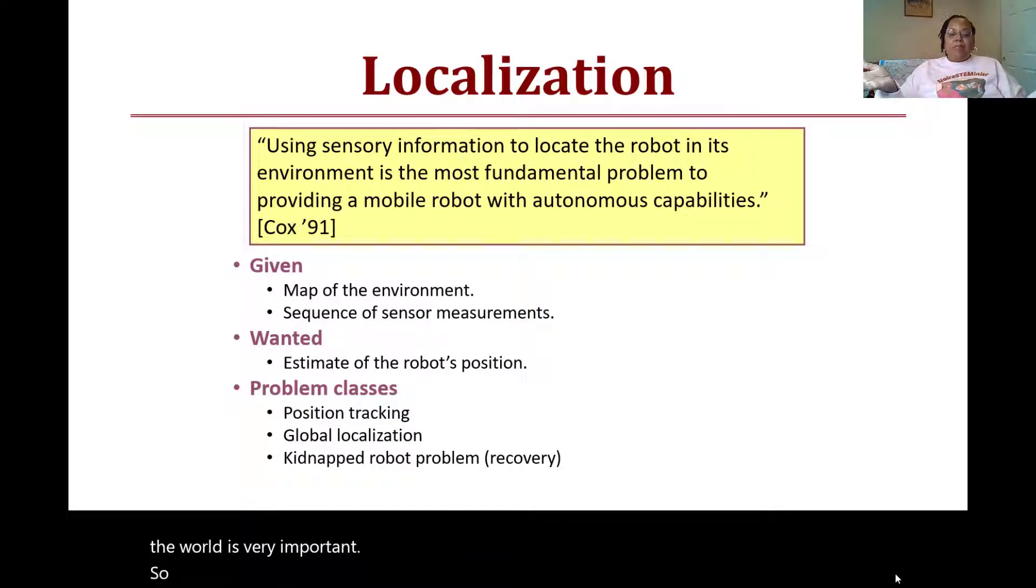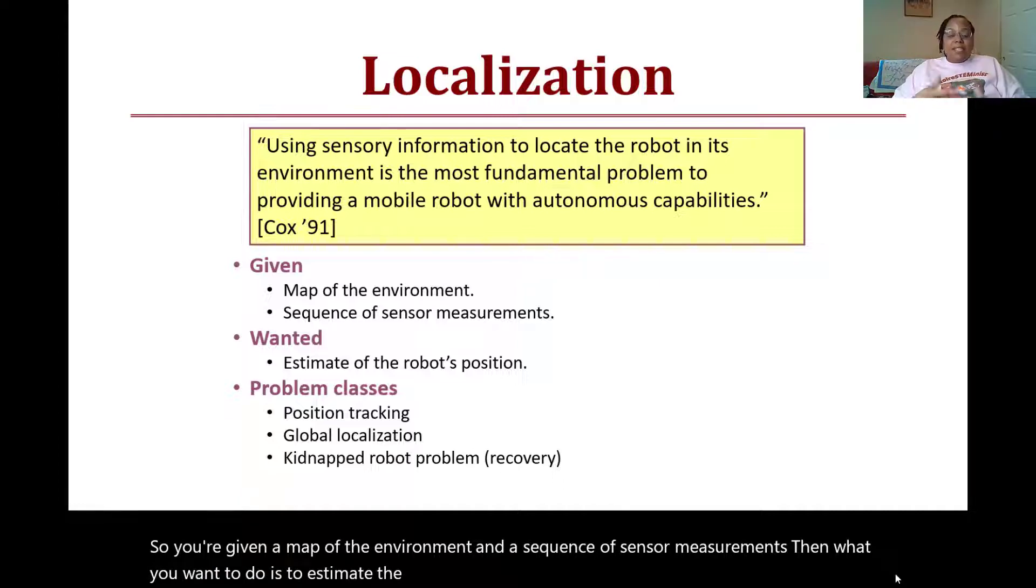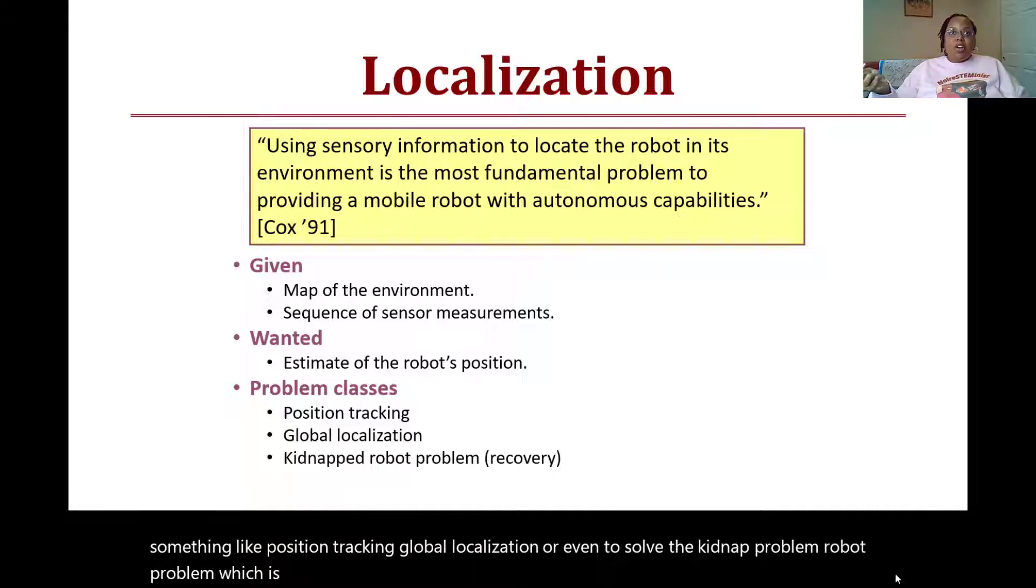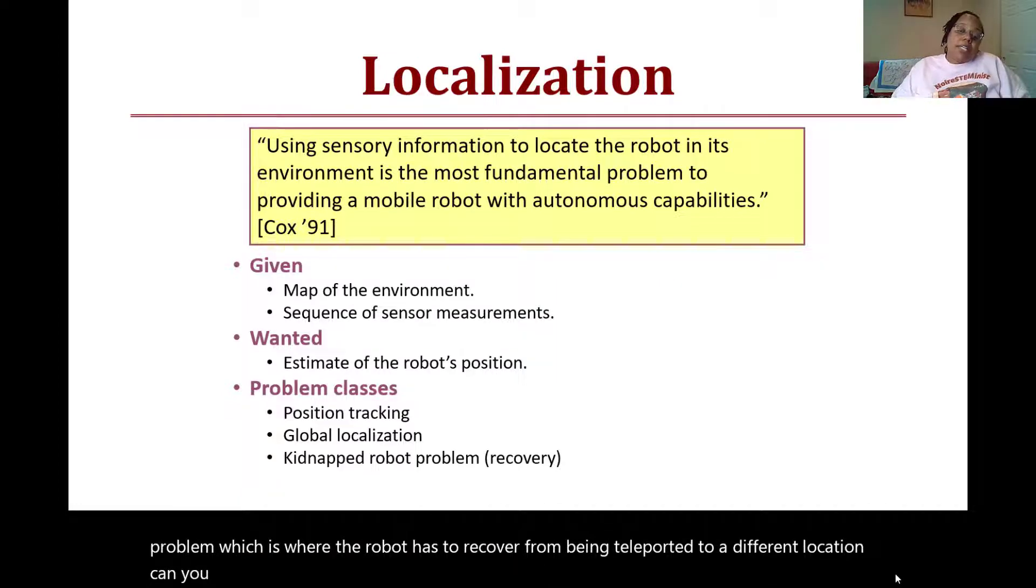You're given a map of the environment and a sequence of sensor measurements. Then what you want to do is estimate the robot's position, typically done as the robot moves, by using something like position tracking, global localization, or even to solve the kidnapped robot problem, which is where the robot has to recover from being teleported to a different location. Can you figure out where it has landed?